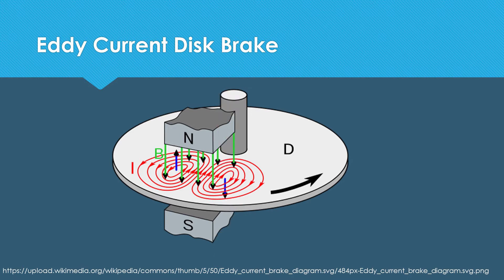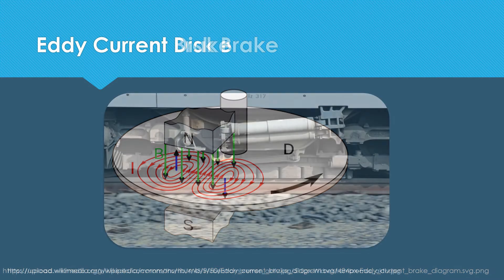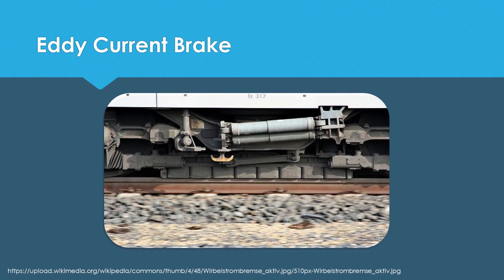The mechanism of all eddy current brakes is like this. One of the major applications of eddy current is in electrical brakes. Eddy current brakes are used widely in trains. Here you can see these coils that are used to generate a magnetic field to induce eddy current in rails.